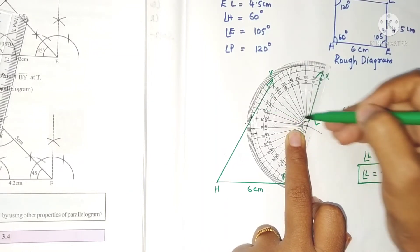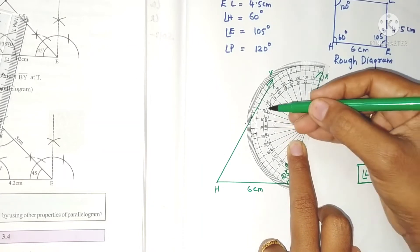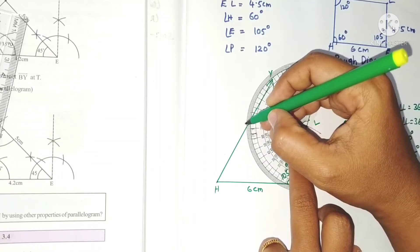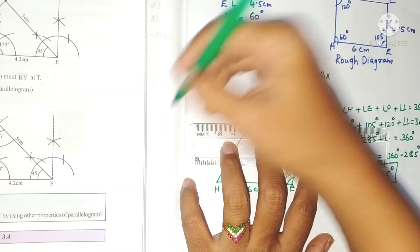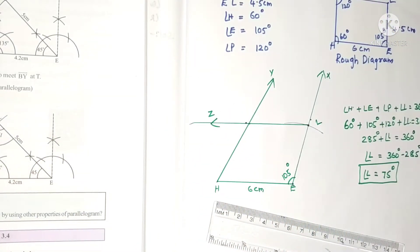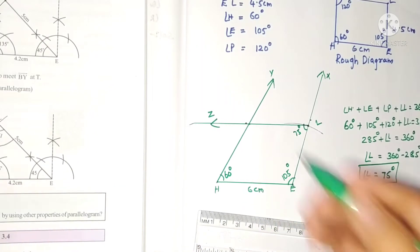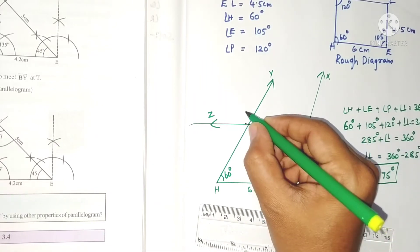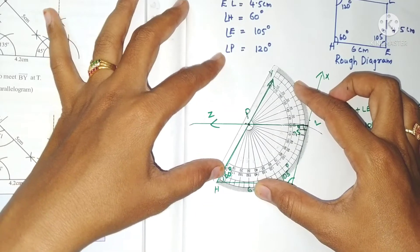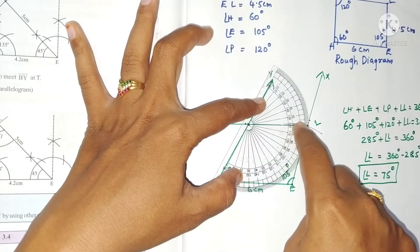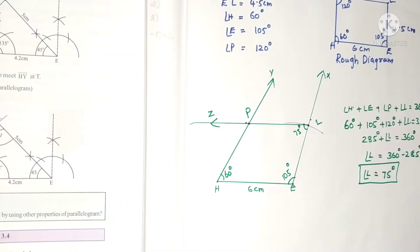Keep the protractor at vertex L. The middle is 90 degrees. Since 75 is less than 90, it lies on the left side — above scale, between 70 and 80. Mark 75 degrees and draw an arc from L, let it be LZ. This angle is 75 degrees and angle at H is 60 degrees. The intersecting point of these two arcs is vertex P. If you check, angle P is exactly 120 degrees. So this is the required quadrilateral HELP.